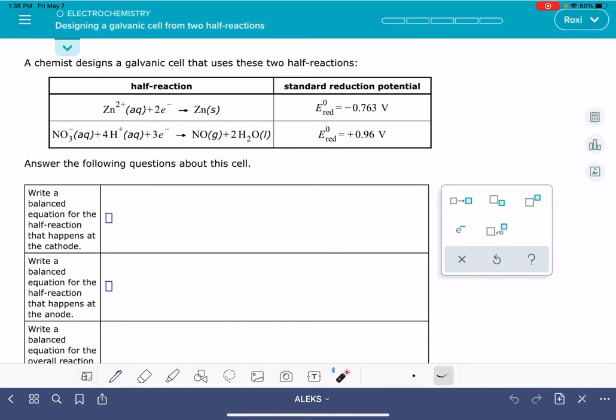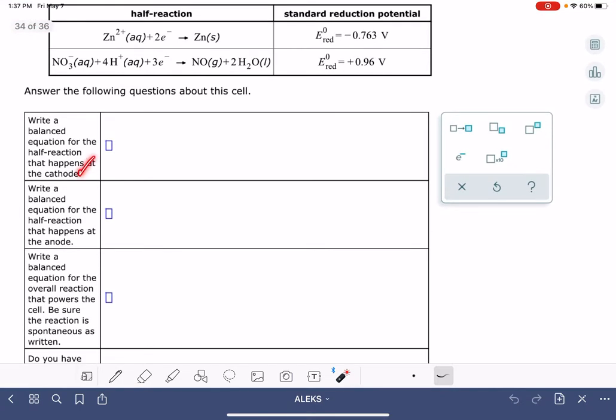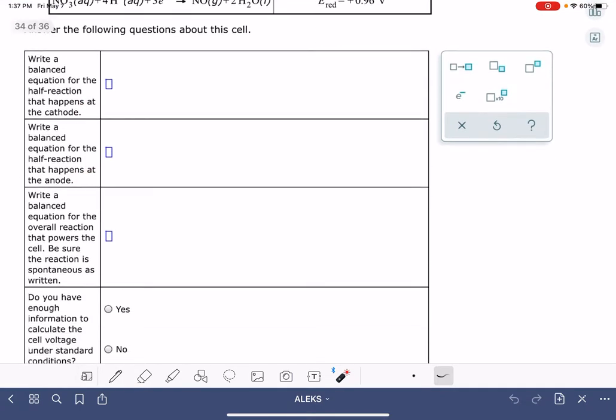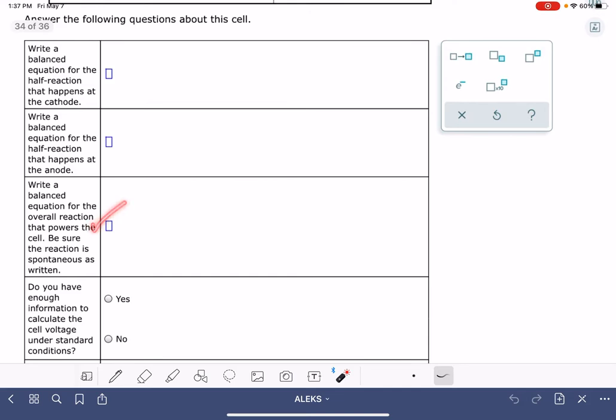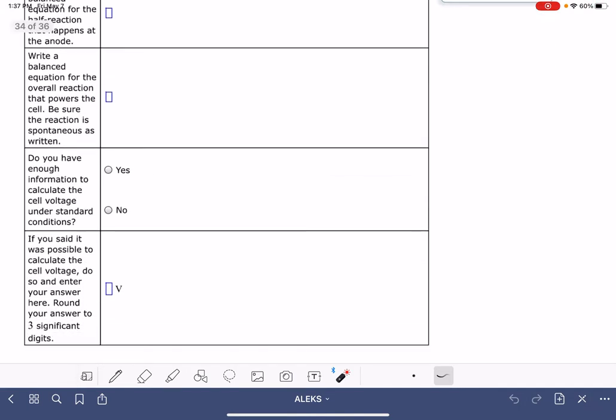In this video, I'll show you how to solve the Aleks problem called designing a galvanic cell from two half reactions. In this problem, you'll be given two half reactions, and they're both being written as reduction reactions.